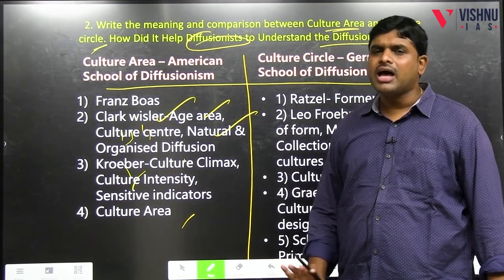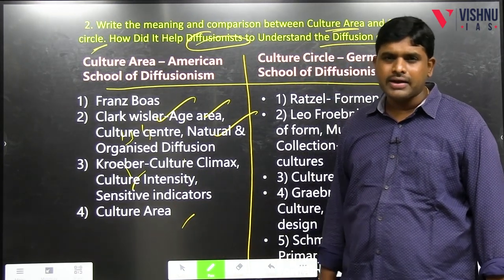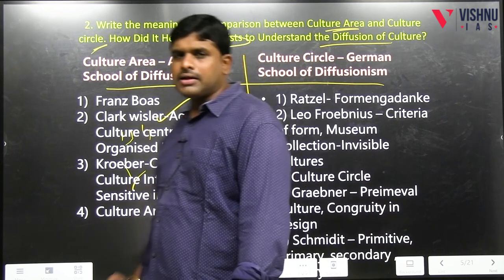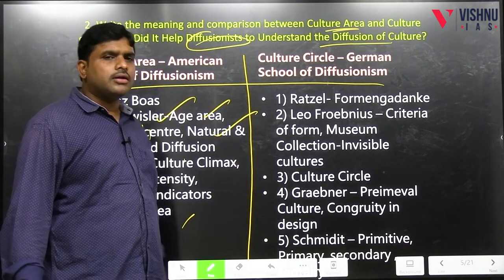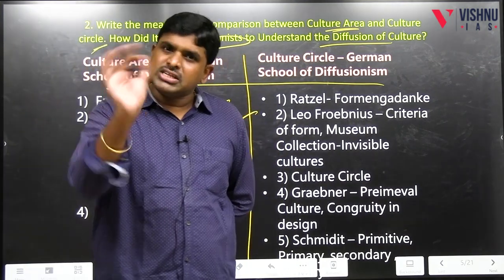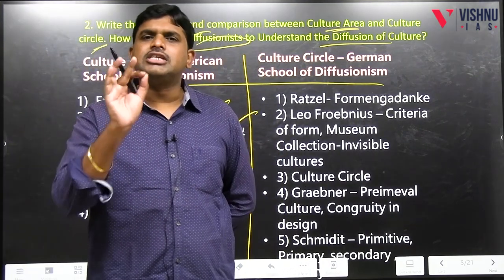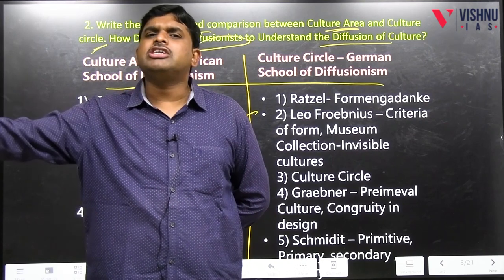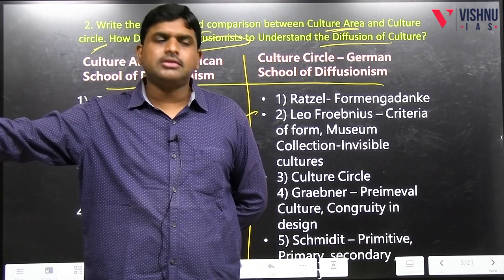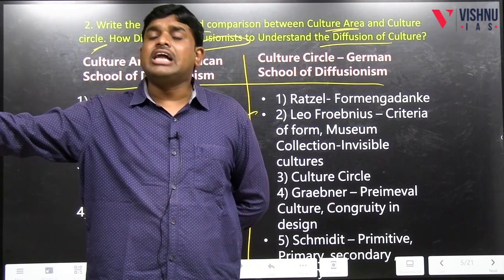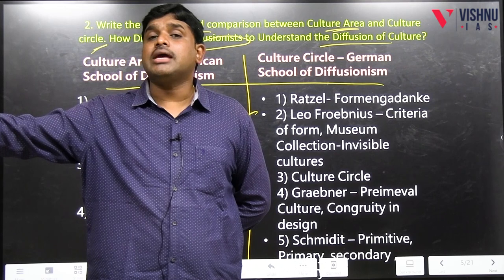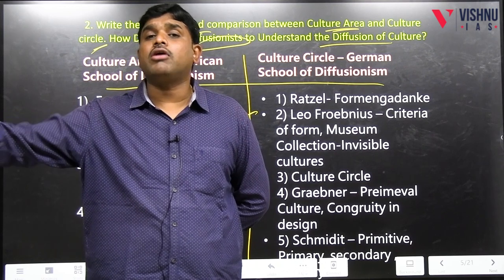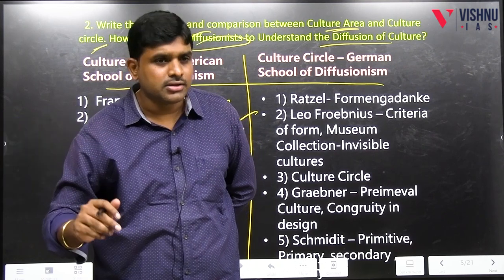These are all the points you should write for culture area. Then coming to culture circle: culture circle is nothing but two different geographies on earth where the cultures are the same. Those particular geographies are called culture circles, and this diffusion happens mainly because of migration of people.